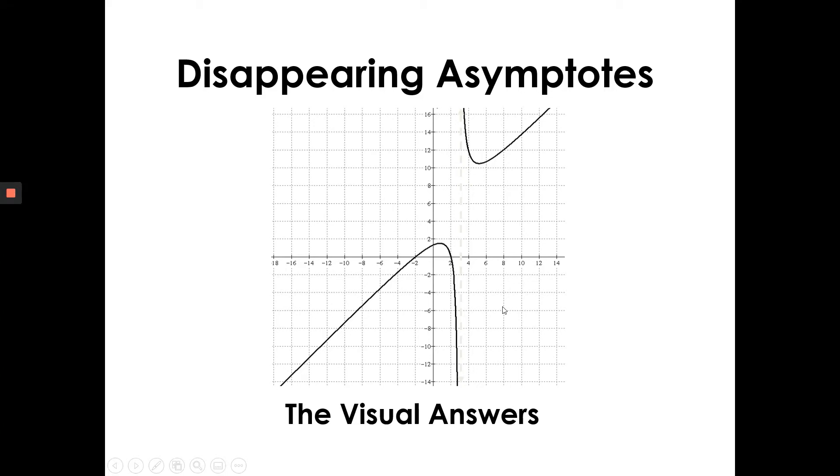We're able to graph reciprocal of a linear function, reciprocal of a quadratic function, and a linear over linear rational function. But something we haven't yet talked about is a special feature that may exist in the graph of a rational function.